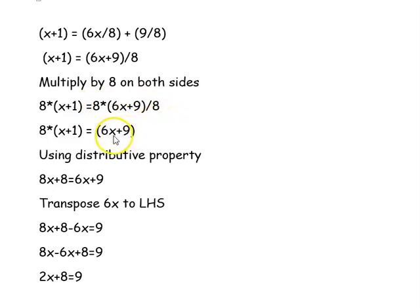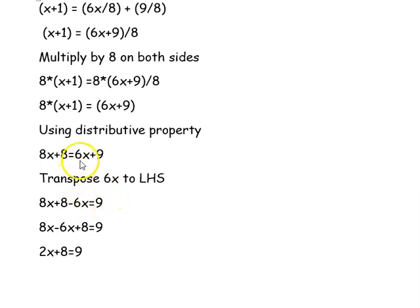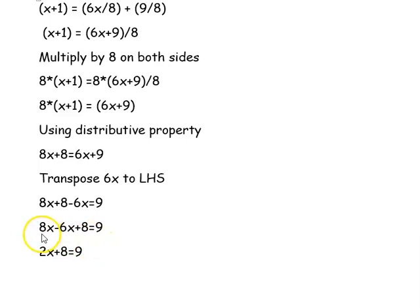The 8s cancel on the right, giving 6x + 9. Using the distributive property on the left: 8x + 8 = 6x + 9. Transposing 6x to the left: 8x + 8 − 6x = 9. Rearranging: 8x − 6x + 8 = 9, which simplifies to 2x + 8 = 9.